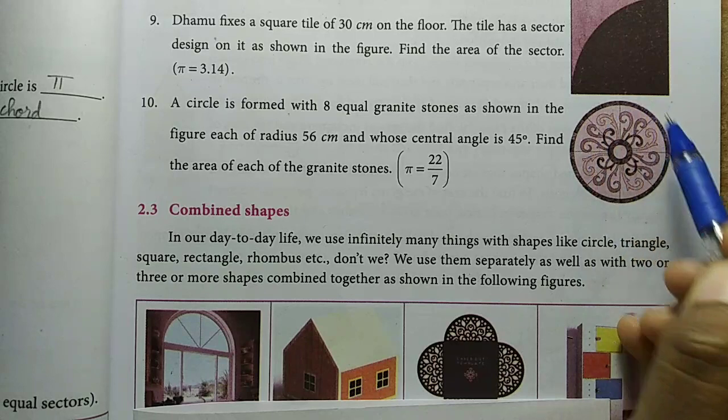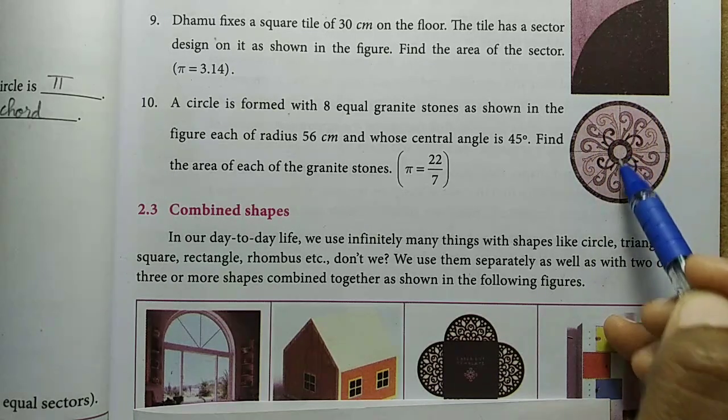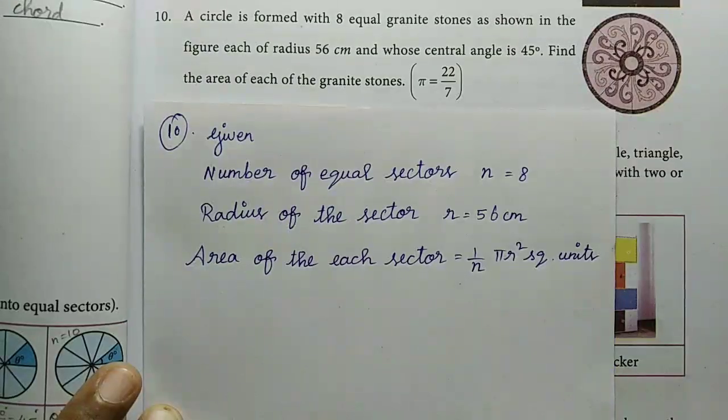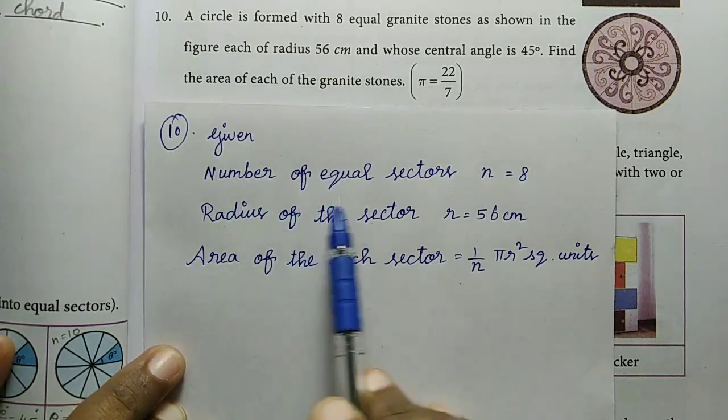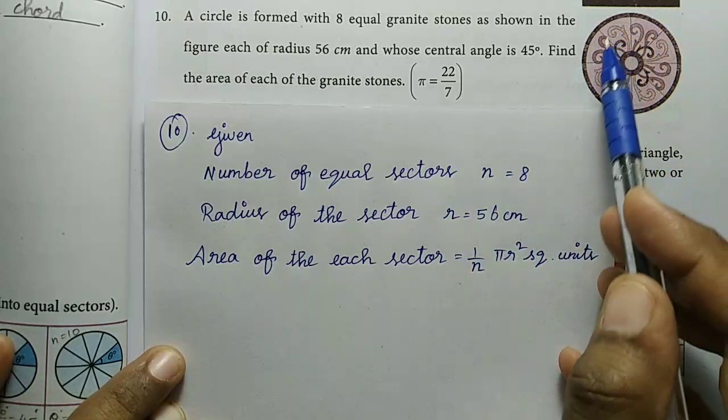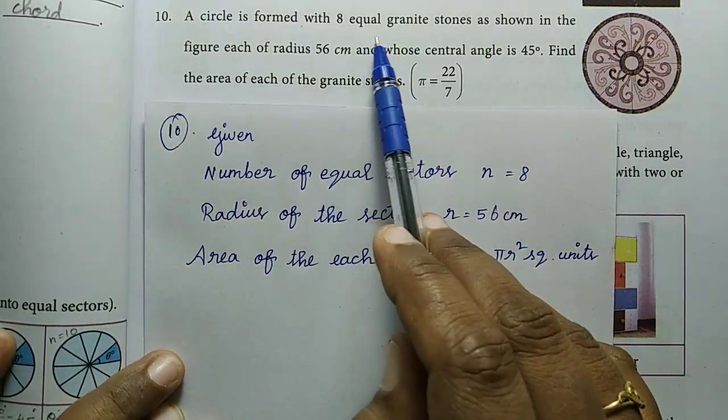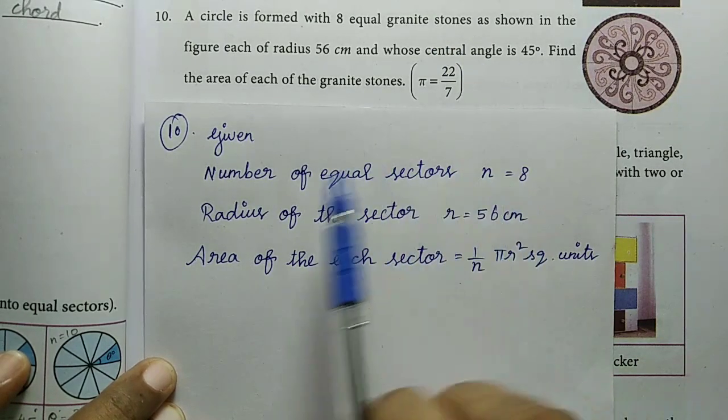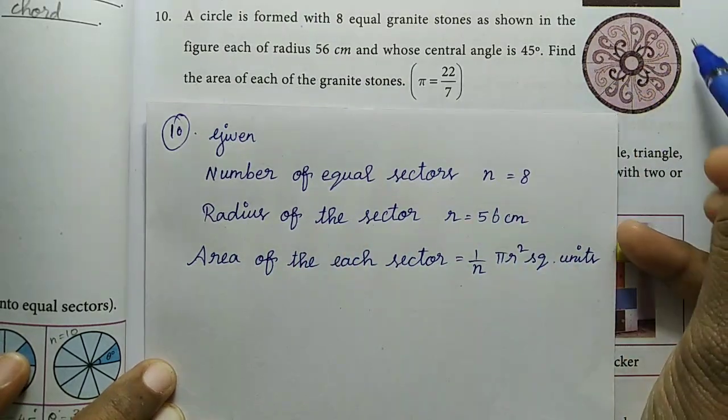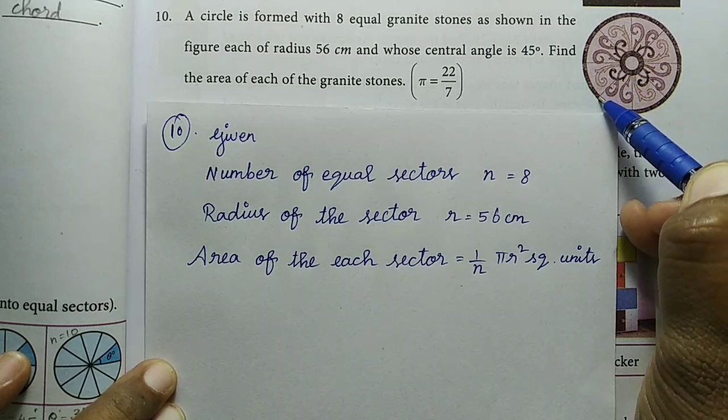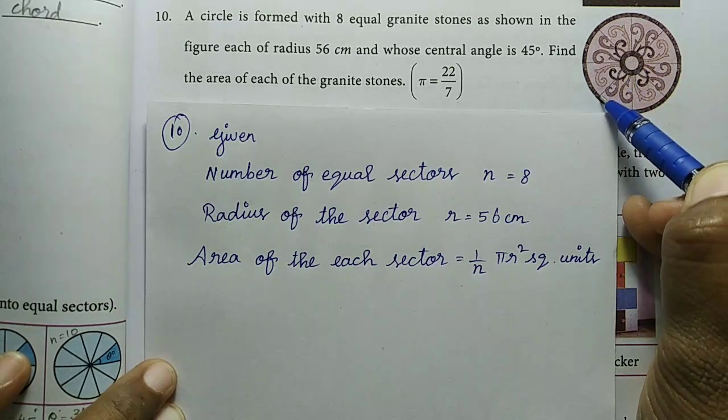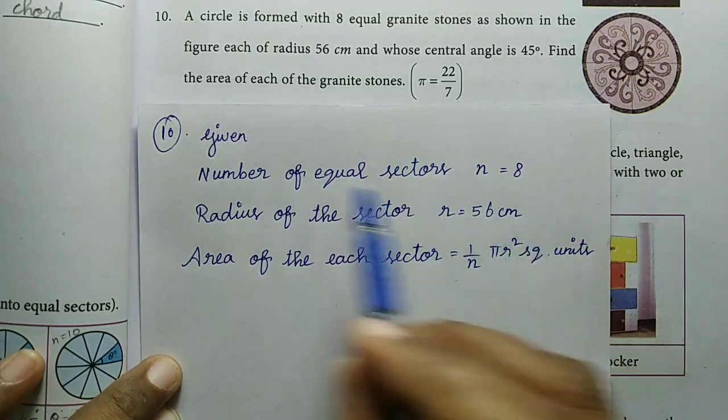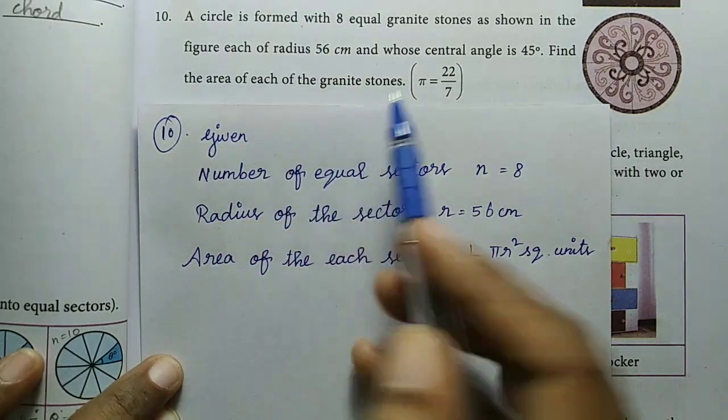Okay, so total 8. That's the area we find. So first, given values. Number of equal stones: 8 equal granite stones. So the value N = 8. This is radius. The circle shape formation of the center, the edge is located, that's the radius.